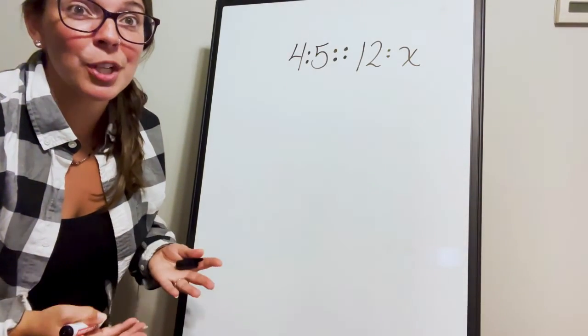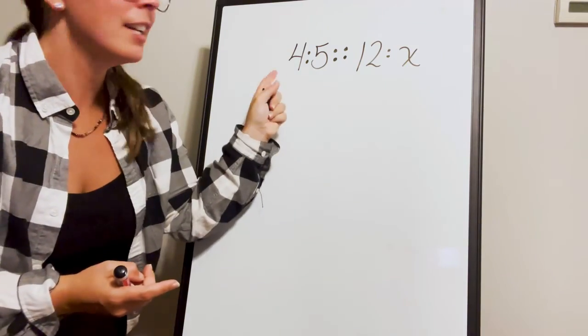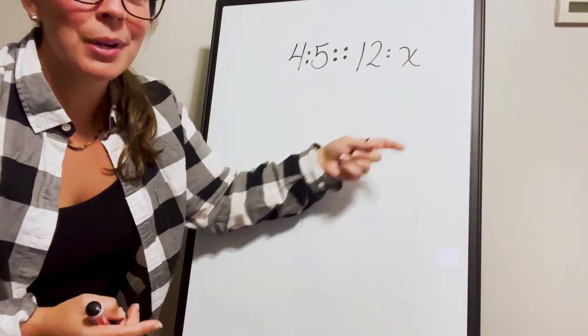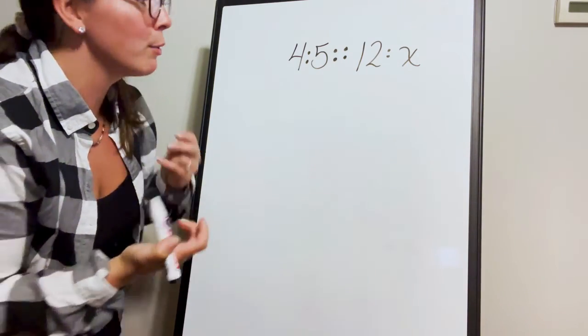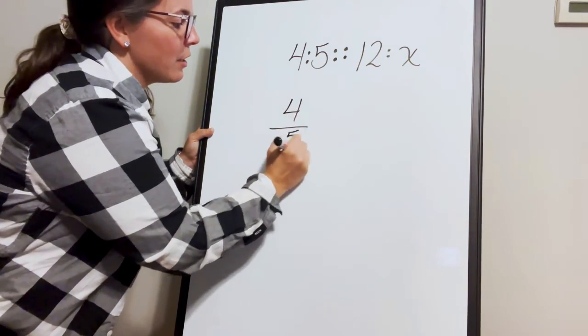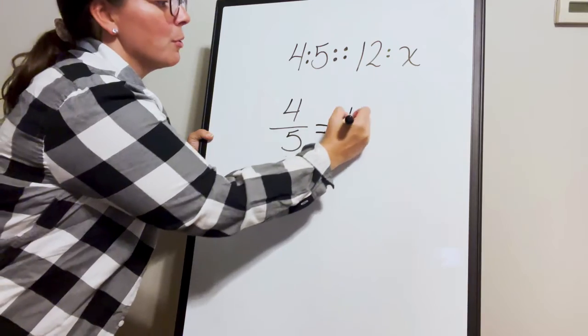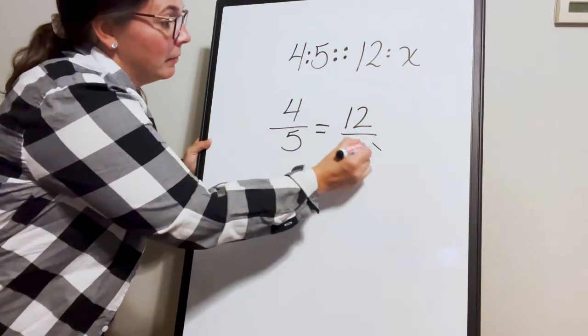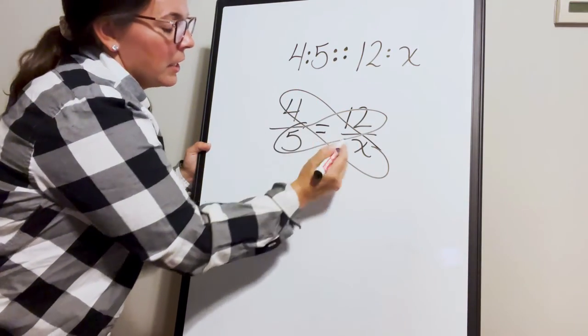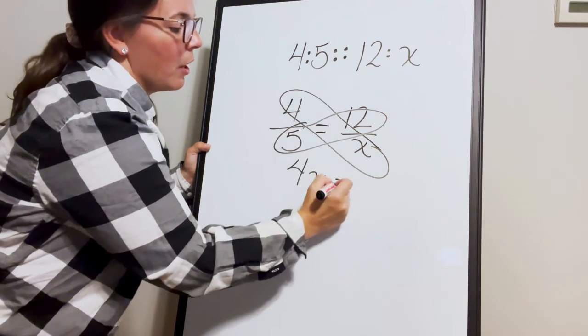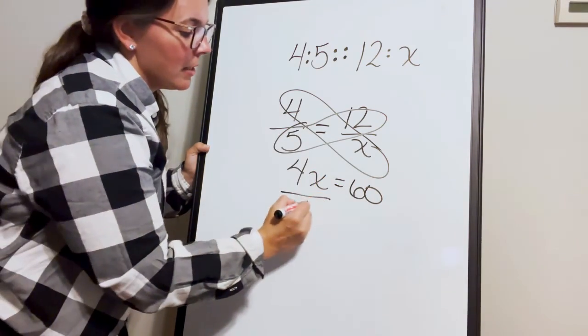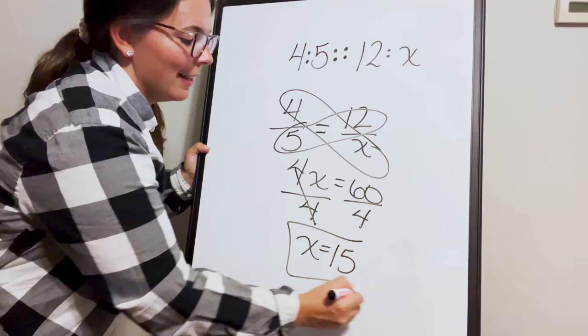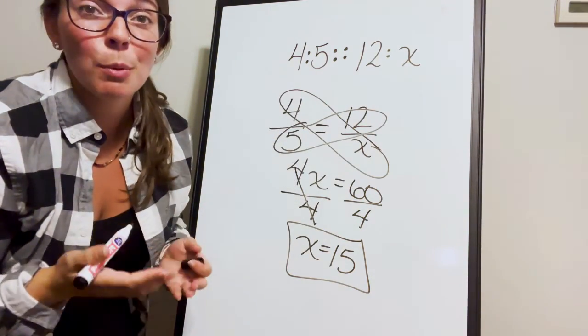Let's try this example of solving a proportion. 4 to 5 is the same thing as 12 to x. This is telling me I have two equivalent ratios. I'm going to rewrite this as a fraction: 4 over 5 equals 12 over x. Cross multiply and try to find x: 4 times x is 4x, 5 times 12 is 60. Divide each side by 4 and find that x equals 15.